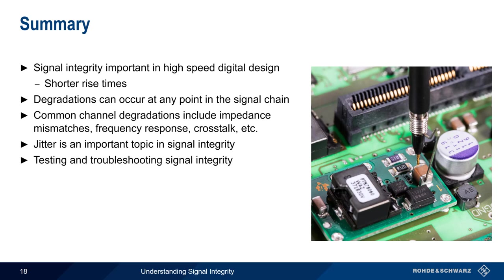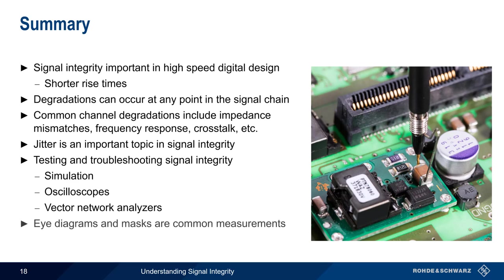There are several ways to test and troubleshoot signal integrity issues. Simulation is often used to model or to predict problems in the early design phases. Whereas both oscilloscopes and vector network analyzers can be used to quantify signal integrity in actual physical systems. In particular, eye diagrams and masks are very often used in identifying and measuring the types and levels of signal degradations.